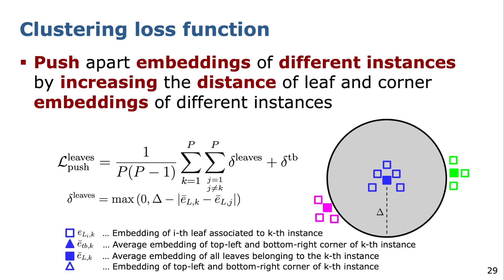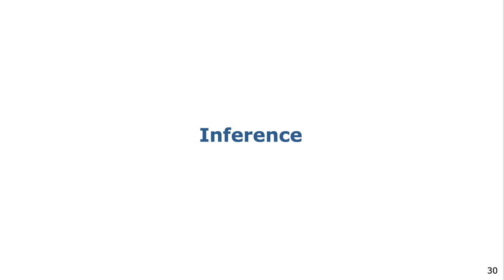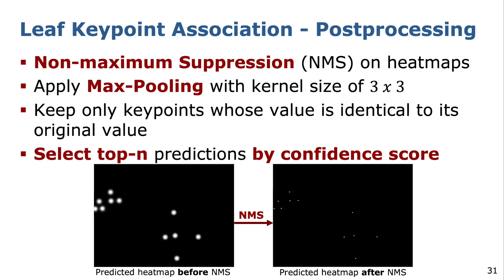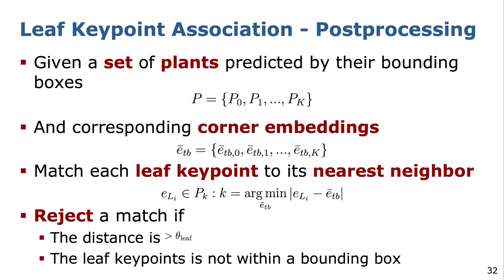By minimizing those objectives, all embeddings of the same instance are closer to each other than embeddings of different instances. Thus, we can associate them by computing the distance between embeddings. At inference time, we apply a simple post-processing procedure to associate each leaf keypoint to its corresponding plant. First, we remove redundant predictions in the heat map by applying non-maximum suppression — a max pooling operation with kernel size 3×3 on top of the predicted heat map, keeping only those keypoints whose value is identical to the original value. Finally, we select the top-k predictions by score and extract the corresponding leaf keypoint embeddings. To match a leaf keypoint to a single plant, we refer to the set of previously detected bounding boxes and their corresponding corner embeddings, assigning a leaf keypoint embedding to the closest corner embedding if the distance is less than a predefined threshold and if the leaf is inside a bounding box.